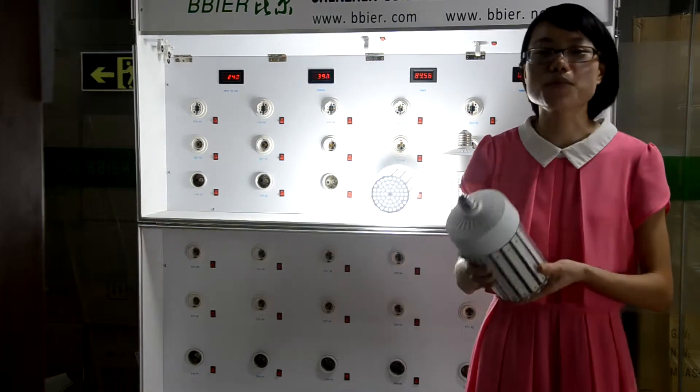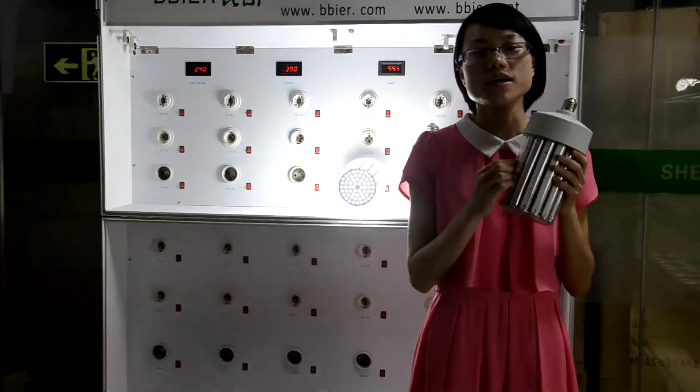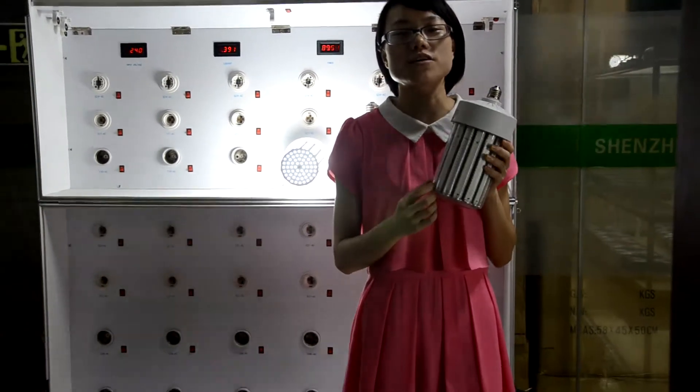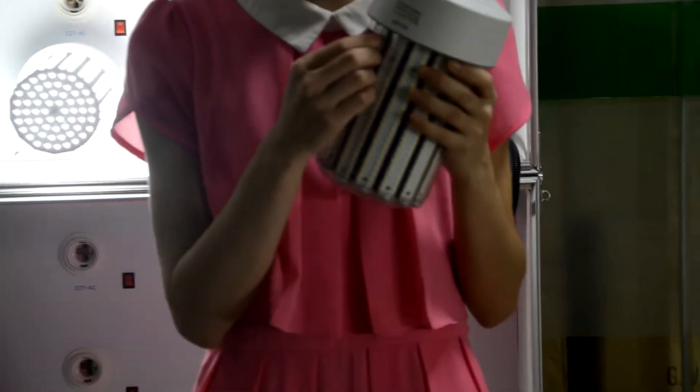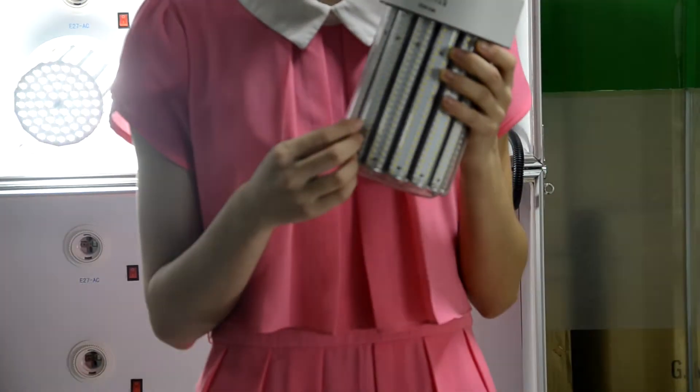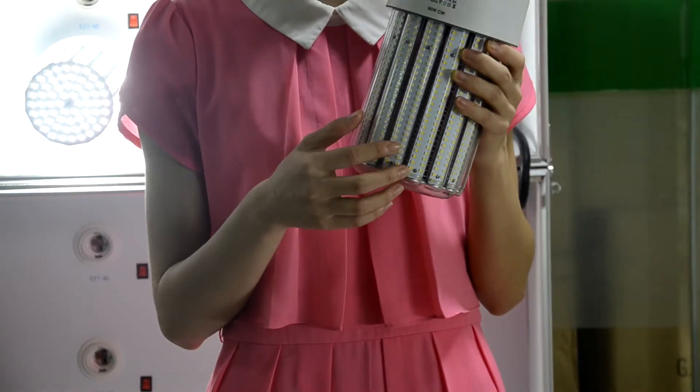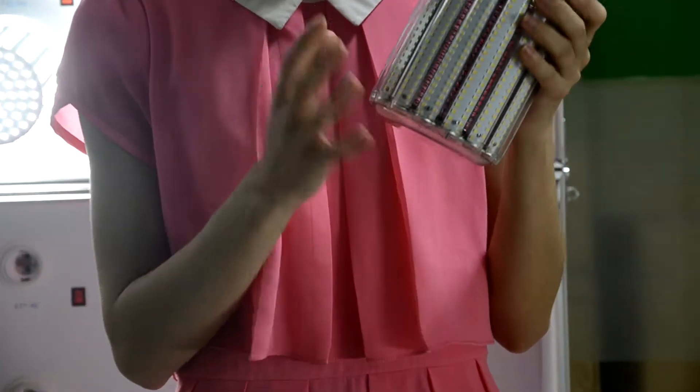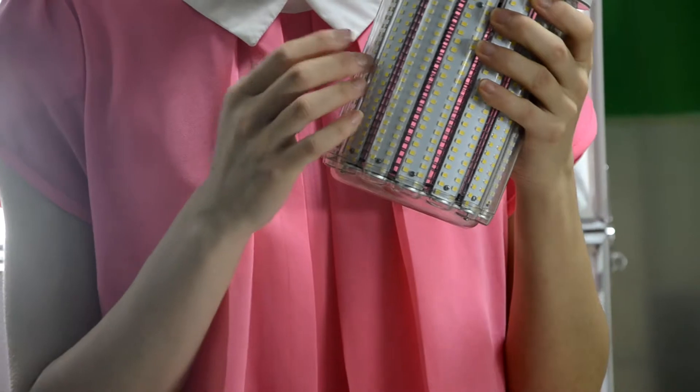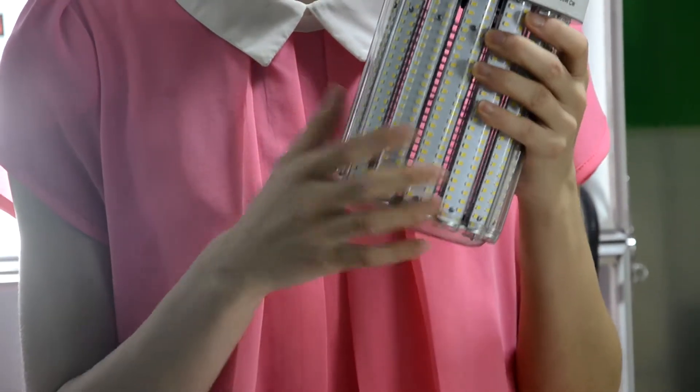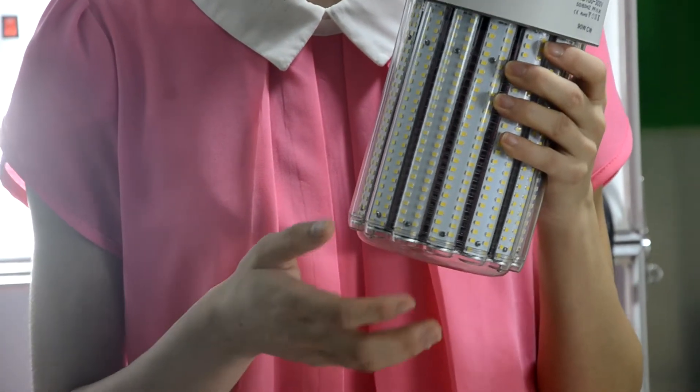And for this type, we can also build with a clear cover and the frosted cover. If you want to make a dustproof or higher IP rating, you can choose this type. And with cover, the lighting goes to ground, it will be more uniform.